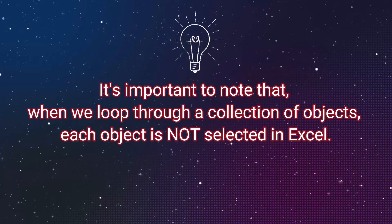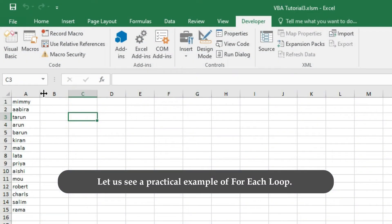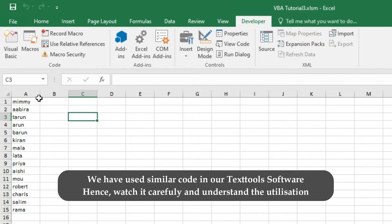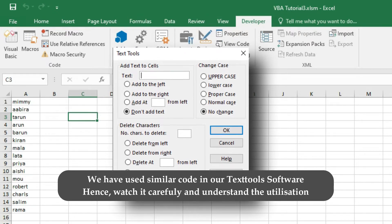It's important to note that when we loop through a collection of objects, each object is not selected in Excel. Let us see a practical example of For Each Next loop. We have used similar code in our text tools software, hence watch it carefully and understand the utilization.